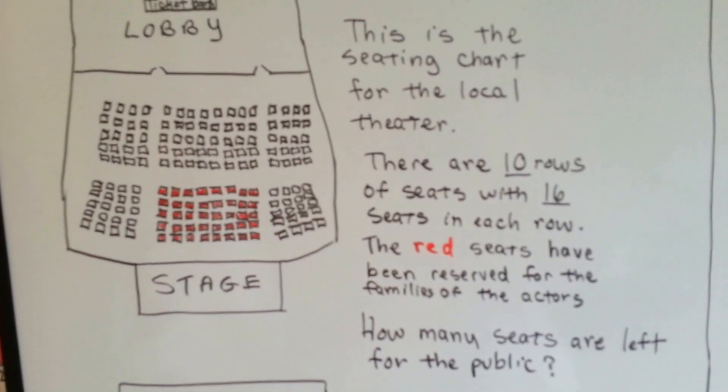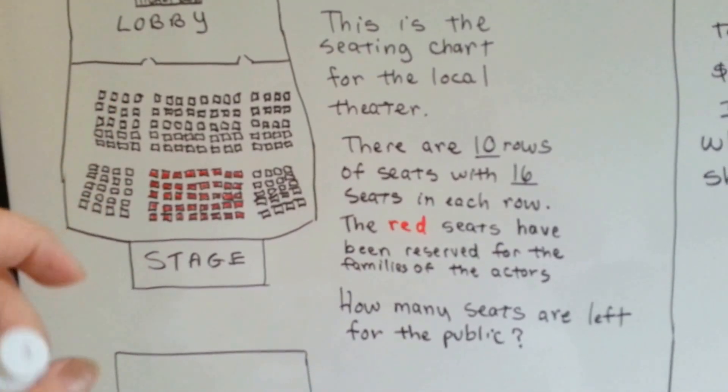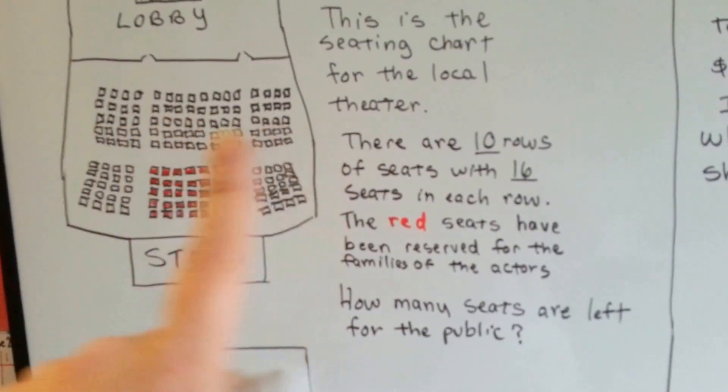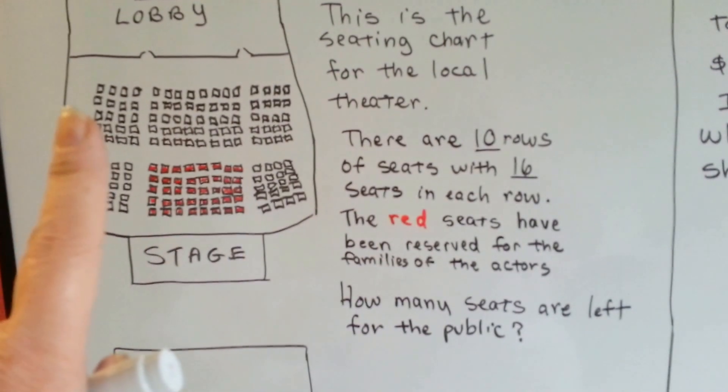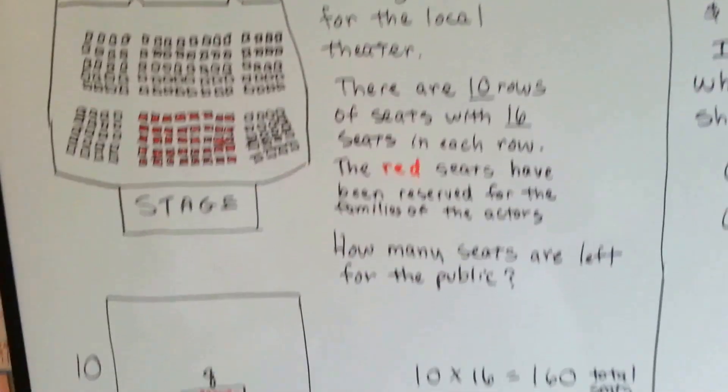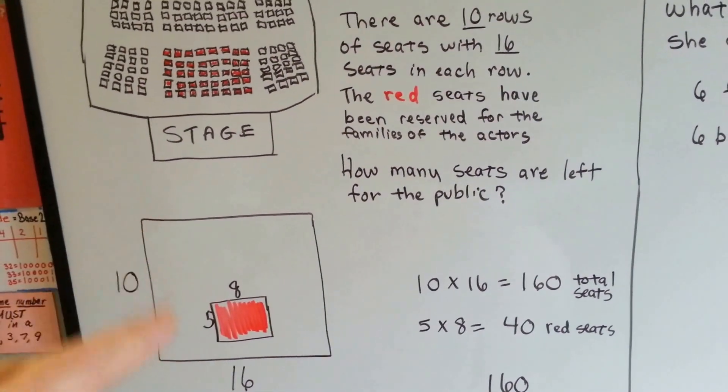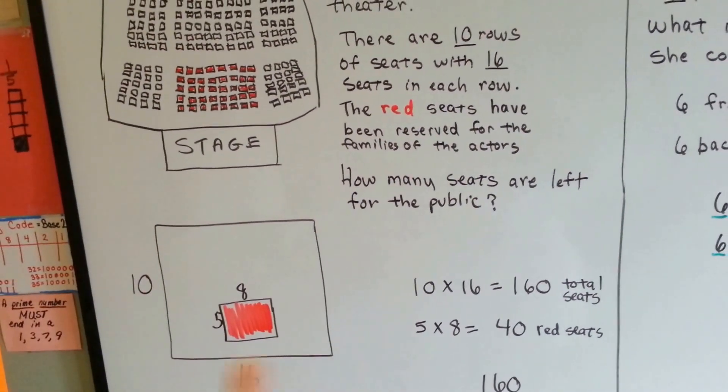So how would we solve this? Well, we know there's ten rows and we know there's sixteen seats in each row. So the first thing we need to do is multiply the ten times the sixteen. So here's the ten times the sixteen. There's ten rows going this way. Sixteen seats going this way.